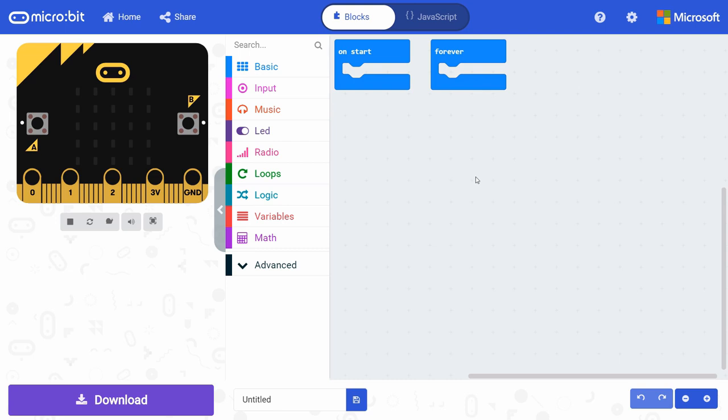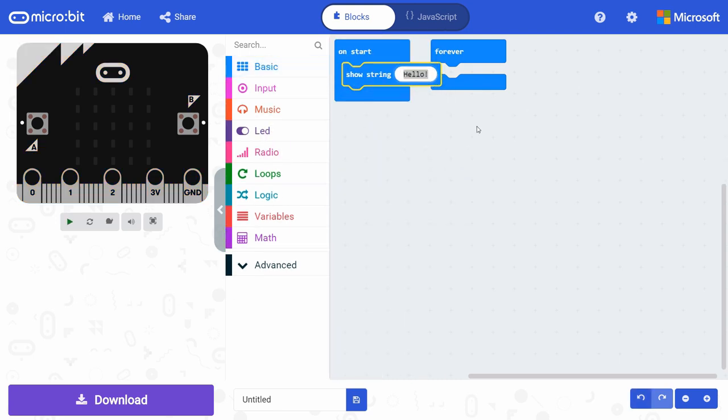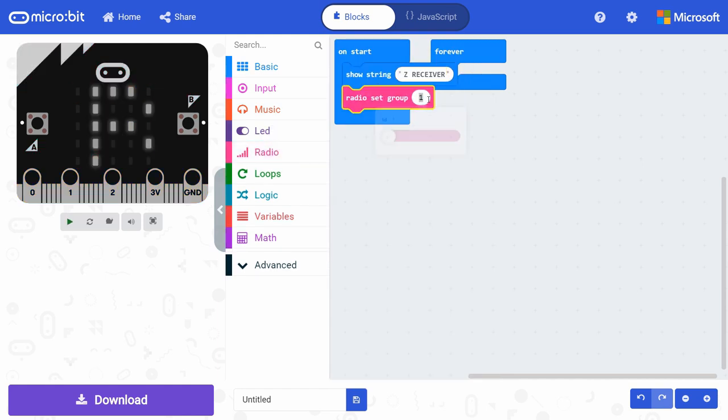In another new project in MakeCode, drag a show string block to on start and change the string to z receiver. Put a radio set group under that and change the group to match that of the transmitter, which is 42 for me.